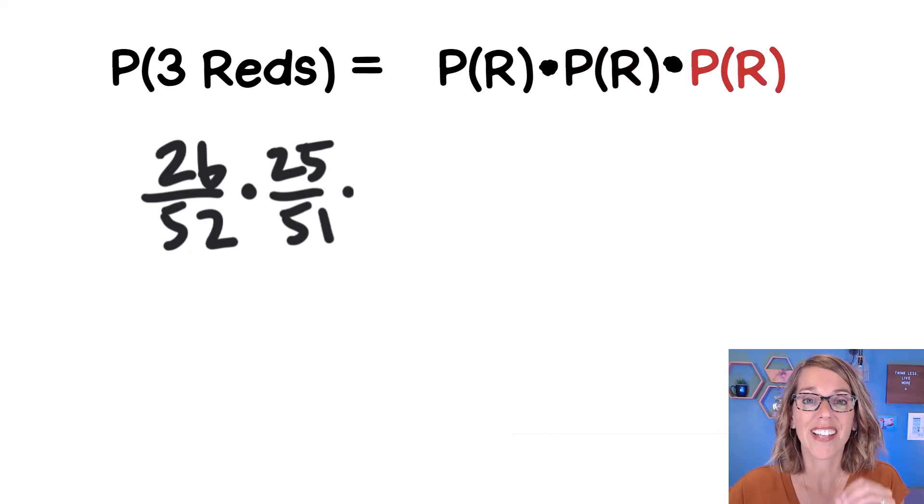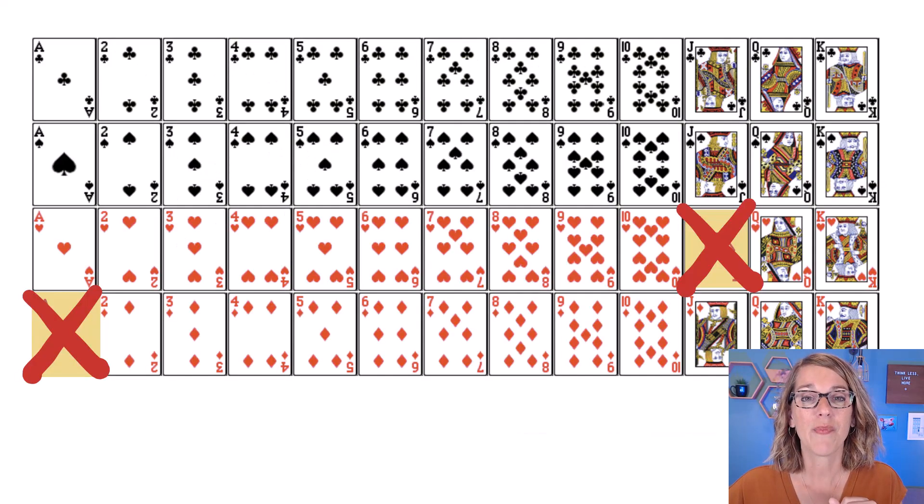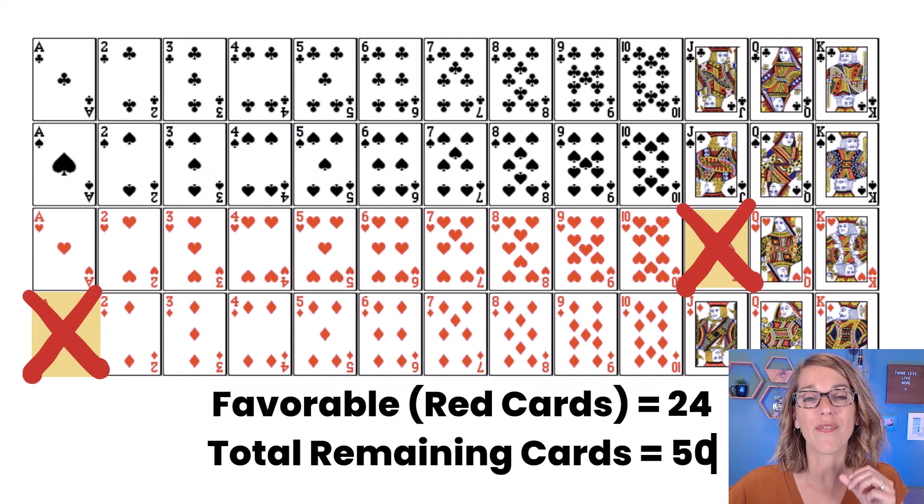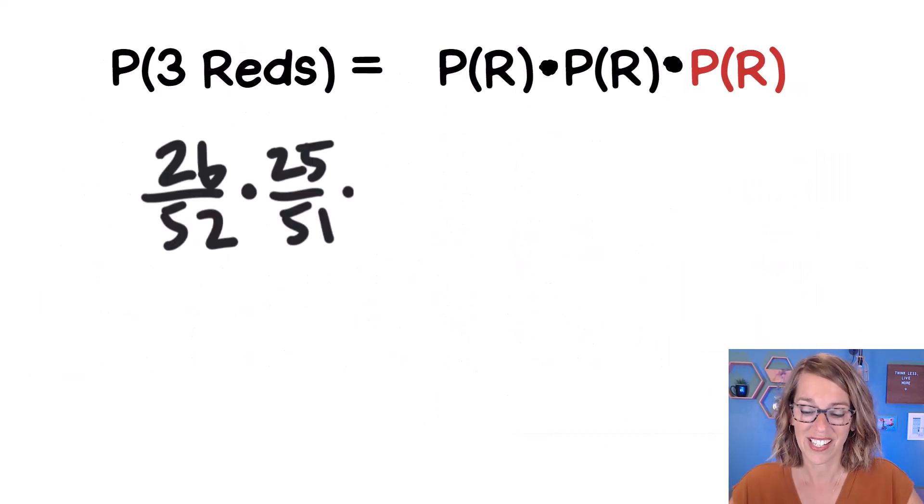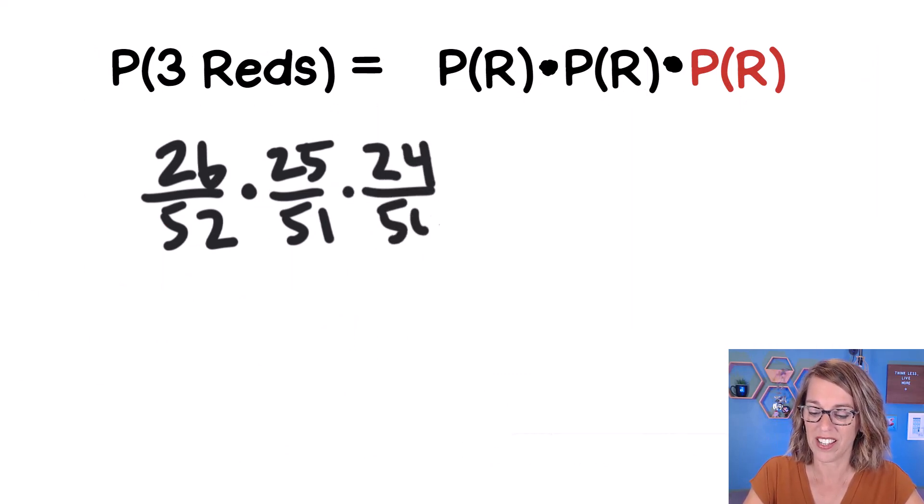I'll bet you can guess what this last fraction probability is going to look like. We've taken two of those cards out of the deck, which means that I'm down to 24 red cards out of a total of 50. Let's go ahead and put that into our last fraction, 24 out of 50. And I'll multiply that in my calculator.